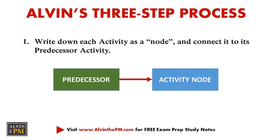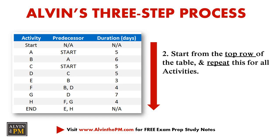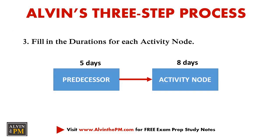The first step that I follow is to write down each activity as a node or a box, as shown on the slide, and connect it to its predecessor activity — in other words, what activity occurs before it. I then repeat this for all the other activities shown in the table. And lastly, for step three, I fill in the durations for each activity node.